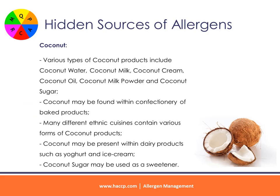Coconut: various types of coconut products include coconut water, coconut milk, coconut cream, coconut oil, coconut milk powder, and coconut sugar. Coconut may be found within confectionery or baked products. Many different ethnic cuisines contain various forms of coconut products. Coconut may be present within dairy products such as yogurt and ice cream. Coconut sugar may be used as a sweetener.